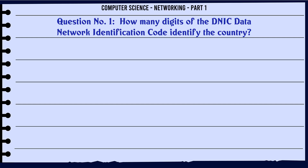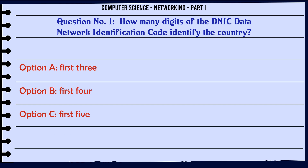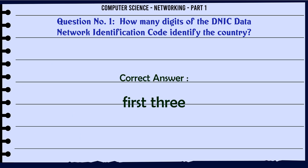How many digits of the DNIC (Data Network Identification Code) identify the country? A. First 3. B. First 4. C. First 5. D. First 6. The correct answer is: First 3.